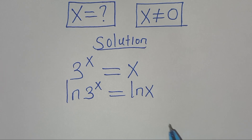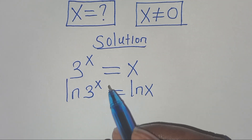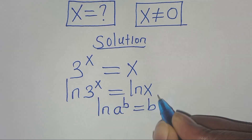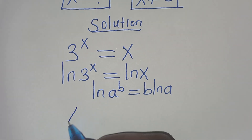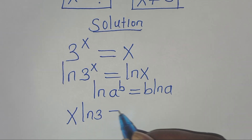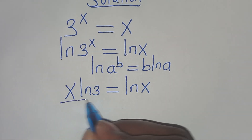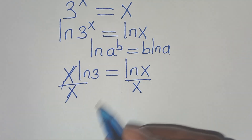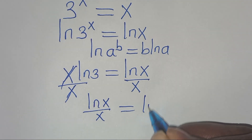The next step from here is that ln of 3 to the power of x is in the form of ln of a to the power of b, which we can express as b·ln(a). Applying this property, we have ln of 3 to the power of x as x·ln(3), this is equal to ln of x. So let's divide both sides by x, so that we have ln(x)/x equals ln(3).